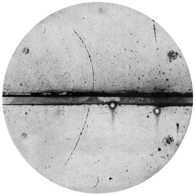The positron, or antielectron, is the antiparticle or antimatter counterpart of the electron. The positron has an electric charge of +1e, a spin of ½, and has the same mass as an electron. When a positron collides with an electron, annihilation occurs. If this collision occurs at low energies, it results in the production of two or more gamma-ray photons.